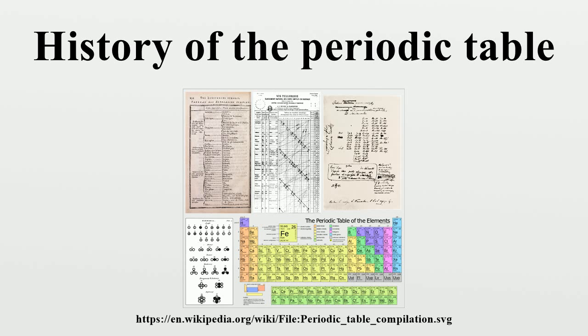Lothar Meyer. Unknown to Mendeleev, a German chemist, Lothar Meyer was also working on a periodic table, although his work was published in 1864 and was done independently of Mendeleev. Few historians regard him as an equal co-creator of the periodic table.